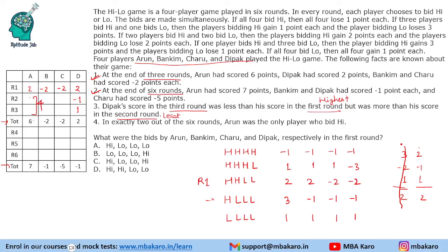Minus one can happen in Round 2 or Round 3. If all four players get minus one in Round 2, Arun would have only five total — not possible. So Round 2 is the one where Arun gets three points and the rest each get minus one. Round 3 can then be deduced: Arun gets one point, and this adds up to minus two for the others. Round 3 is an all-low scenario where everyone gains one point each.